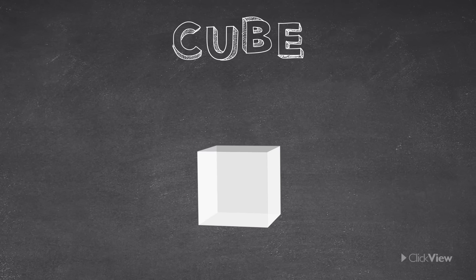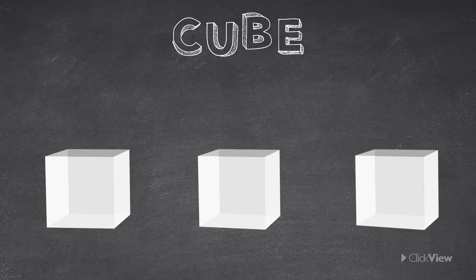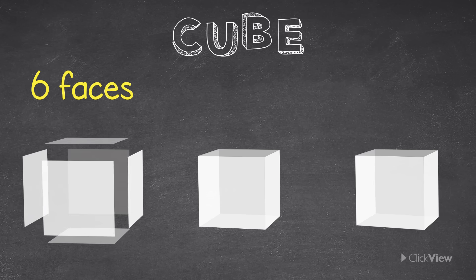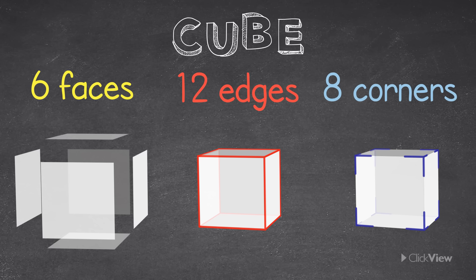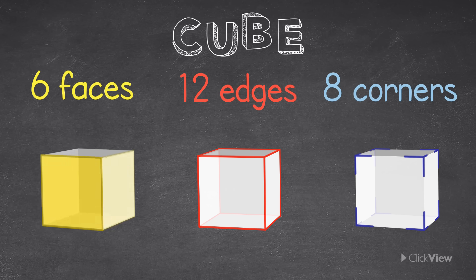This shape is a cube. A cube has 6 faces that are identical, 12 edges and 8 corners. All of the faces, edges and corners are the same size and length. Can you see how each face of the cube is a square?